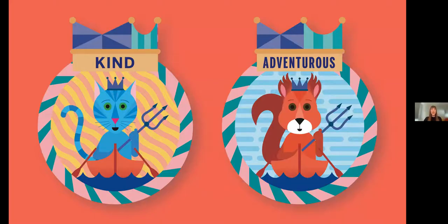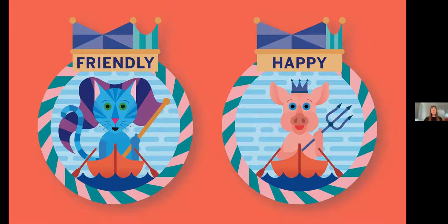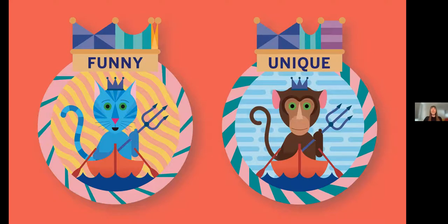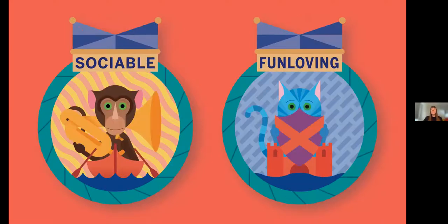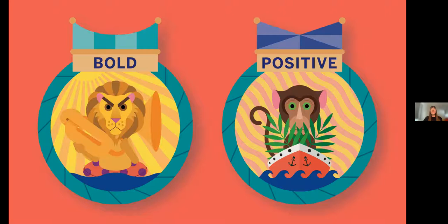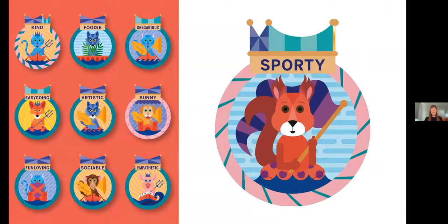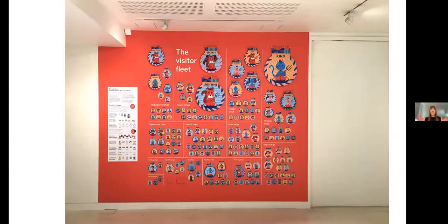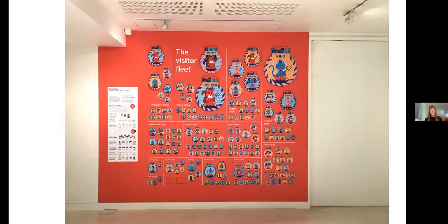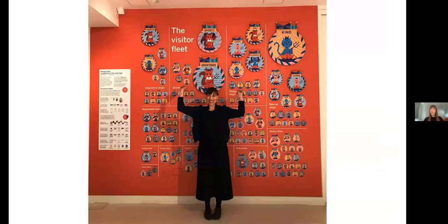The average extroversion score is represented by the object the animal is holding — shields and palms obscuring the face represent more introversion, while animals flying their flags and blowing their own horns represent higher extroversion. What the animal is sitting in represents the average openness score, ranging from a pool ring for the less conventional to a fortress or castle for the more traditional. Weather around the animal represents neuroticism — sunshine for those who are stable and calm, stormy weather for those who are often worried. The water represents conscientiousness, from calm smooth seas for tidy organized personalities to a tidal wave for people who embrace chaos. Every single one of the 177 created badges is unique.